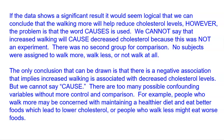There are too many confounding variables without more control and comparison. For example, people who walk more may be more concerned with eating a healthier diet, and eating better foods will lead to lower cholesterol — or people who walk less might eat worse foods. If we don't control for confounding variables like diet in a proper experiment, that's why we can't use the word 'cause.' A lot of students will read the problem and say 'sounds great,' but that word cause is the big problem. We can definitely claim there's a negative association — walk more, cholesterol goes down — but we can't say A causes B. Take the time to explain yourself and you'll get a really good score.